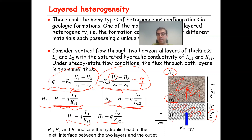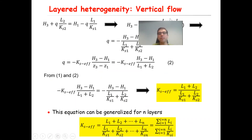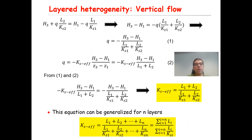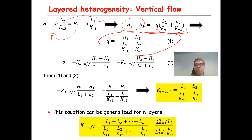H1, H2, H3 represent the hydraulic head at the inlet, the interface, and the outlet respectively, as indicated in the figure. Rearranging that equation, bringing H1 to one side and factoring out −Q, we get: H3 − H1 = −Q·(L1/Ks1 + L2/Ks2). Solving for Q gives equation 1: Q = (H3 − H1) / (L1/Ks1 + L2/Ks2).